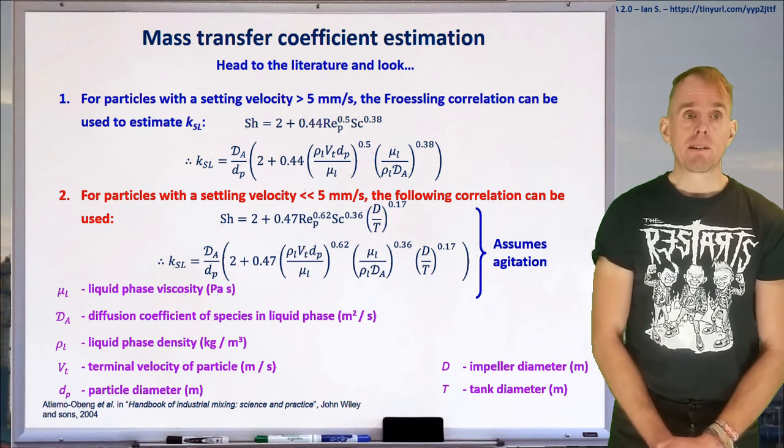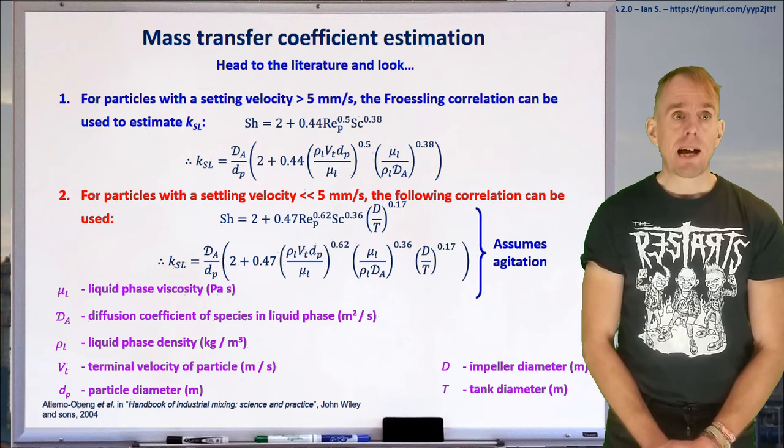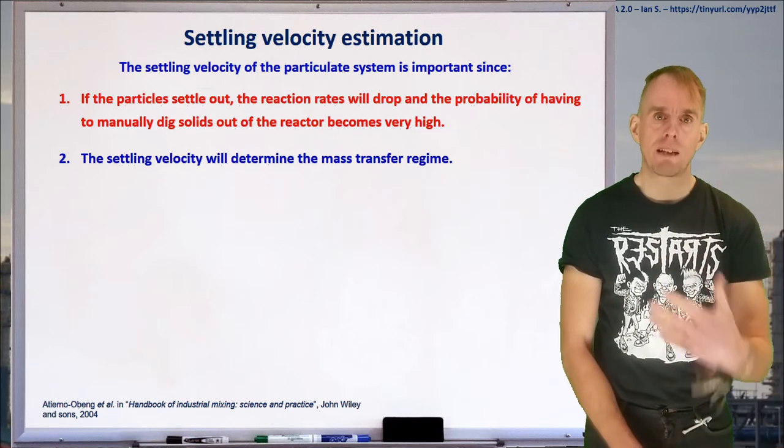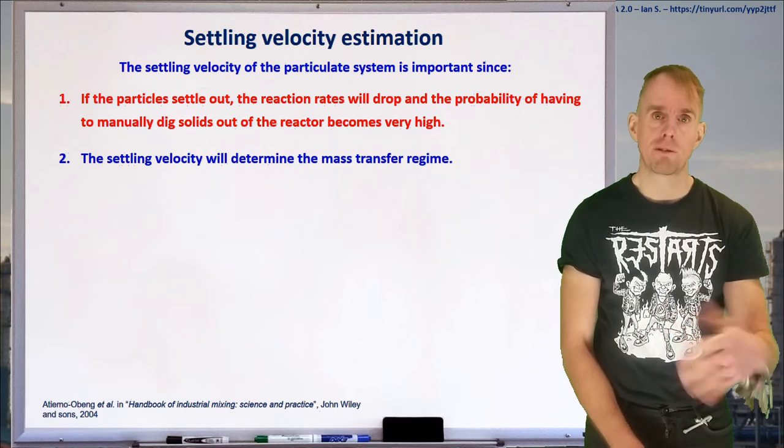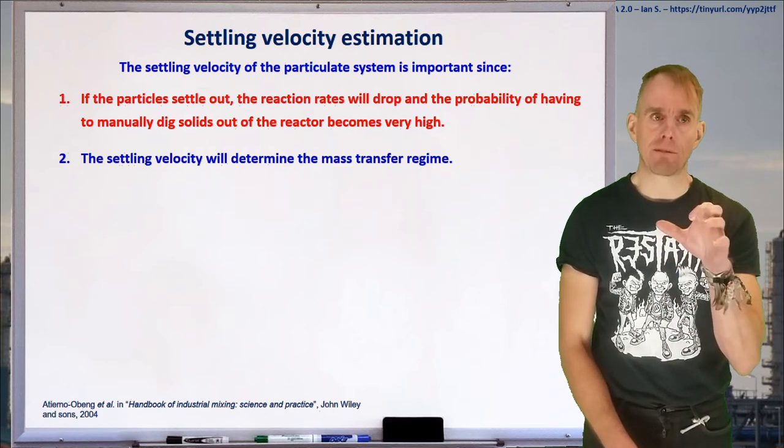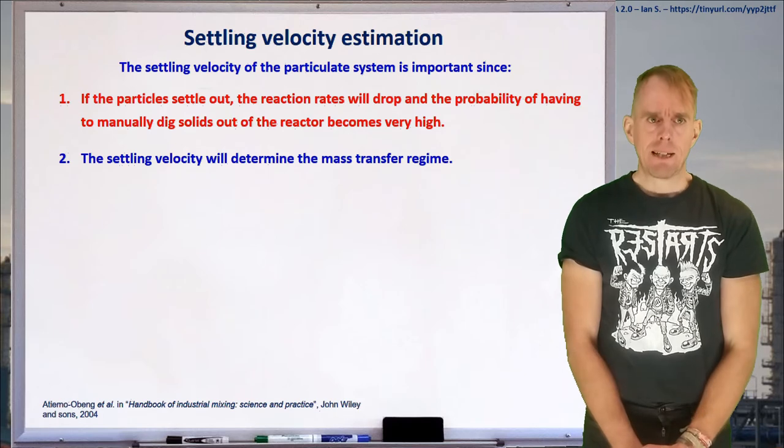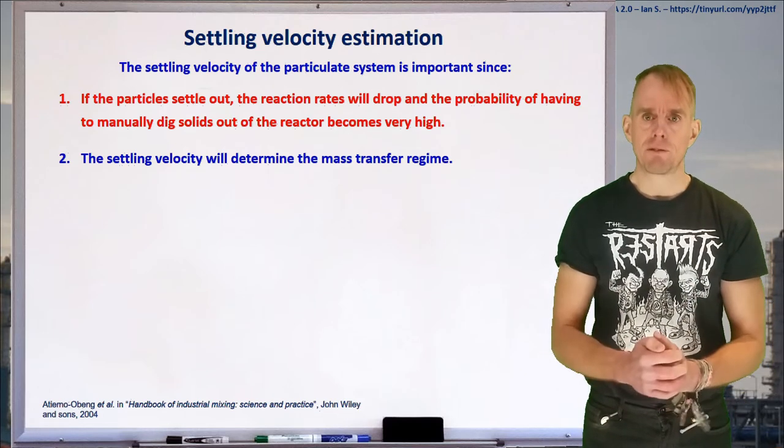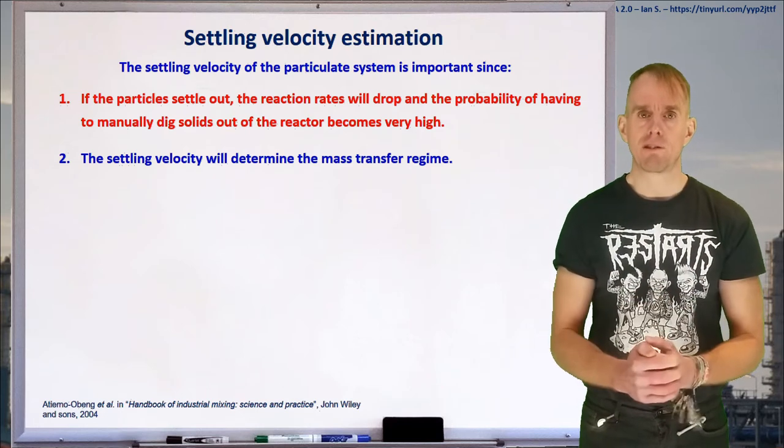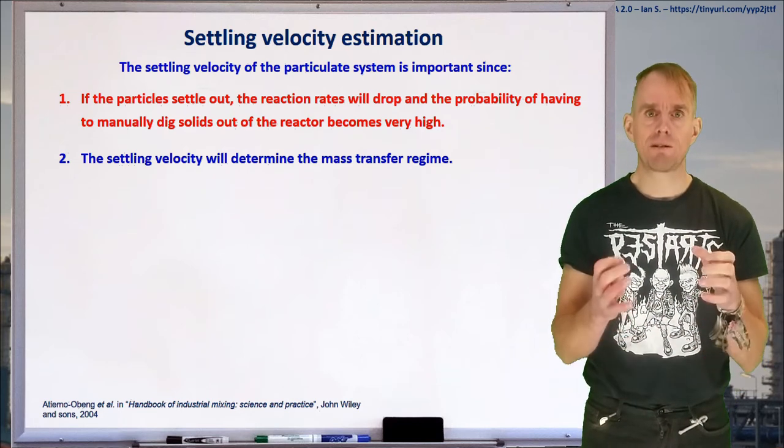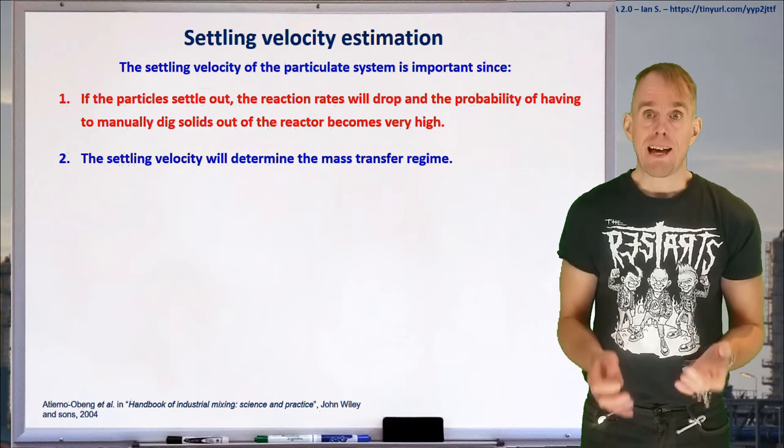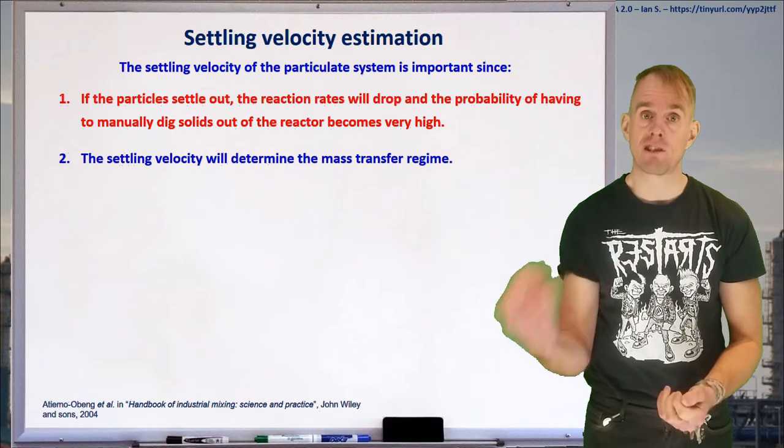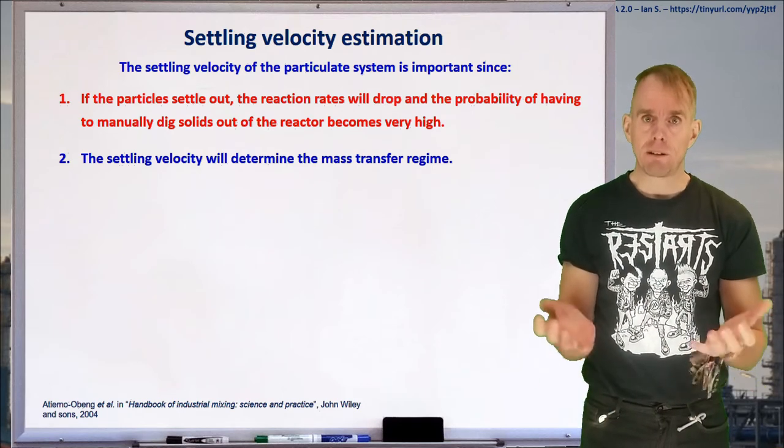Now, what we need to think about next is how we estimate particle settling velocity. We've seen that the particle Reynolds number, which is important for our mass transfer, is written in terms of settling velocity. Now, if our particles all settle out, this is a bad thing. We've already stated that a number of times. Not only do we lose volumetric surface area, but we block our equipment up. So we need to estimate our settling velocity and make sure that our particles remain suspended. So whatever extra agitation we put in has to be greater than that settling velocity.